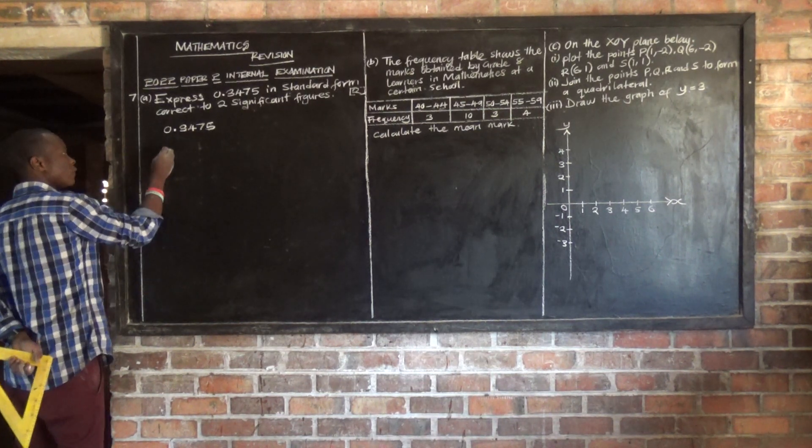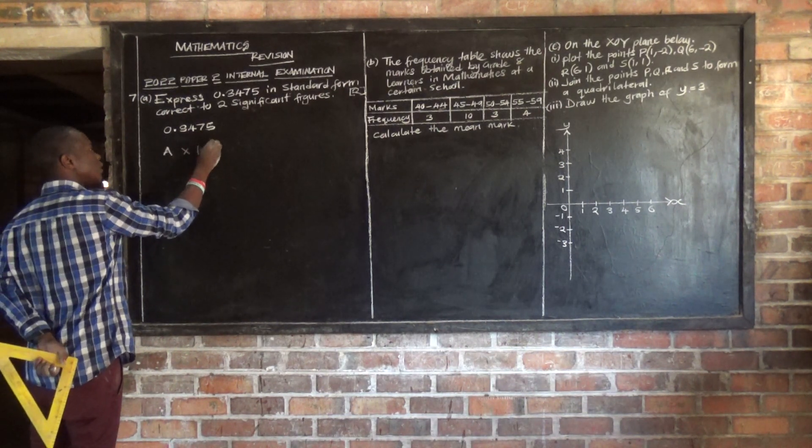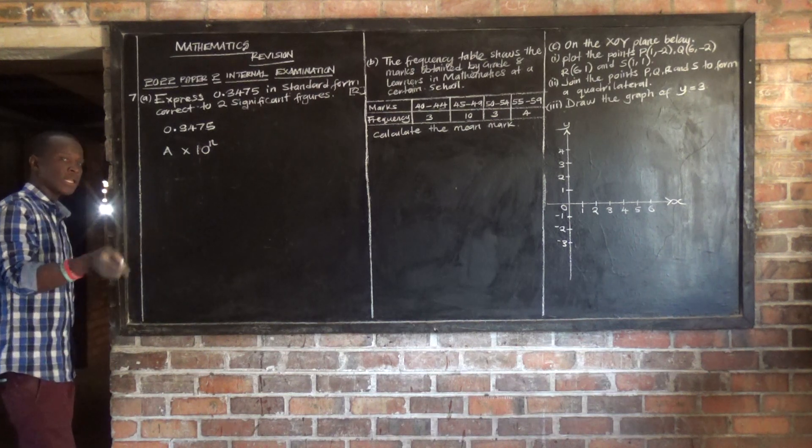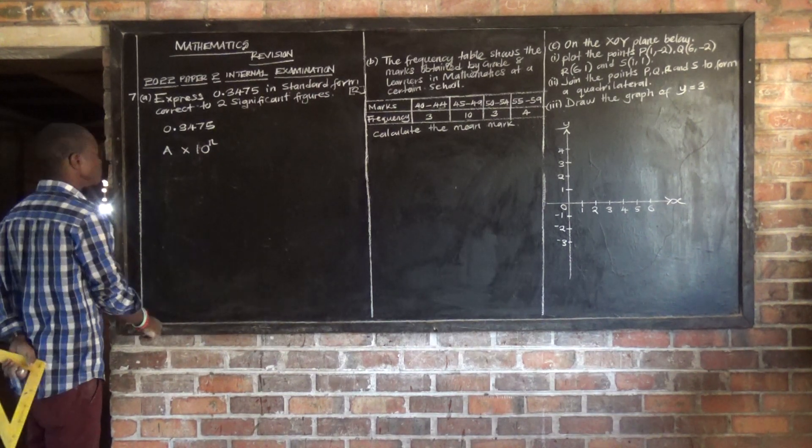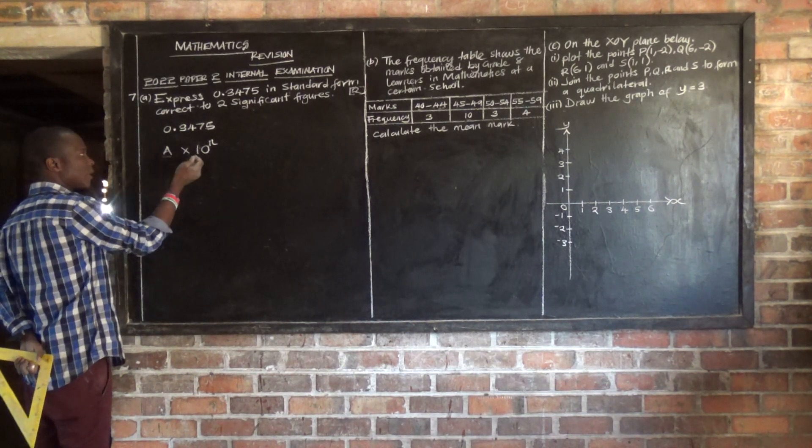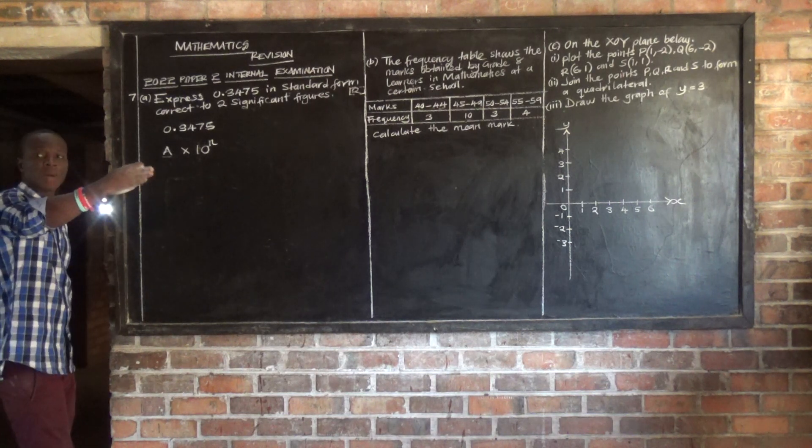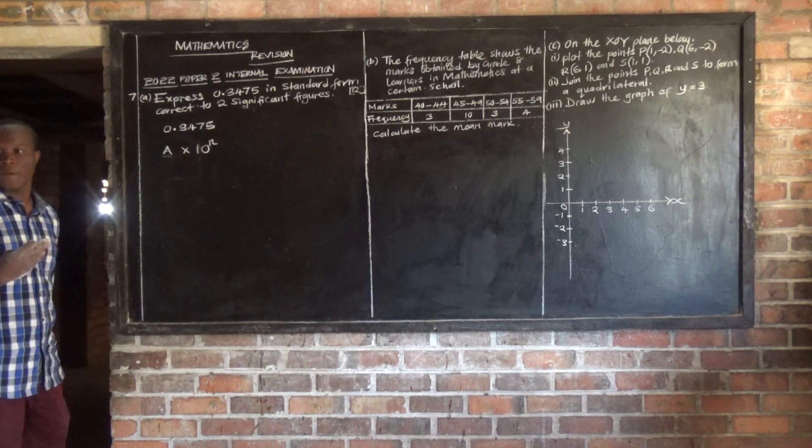When you write this, the formula is A times 10 raised to power n, where this n is the integer. The integer can either be positive or negative. Then this A is a number which is at least 1, it should start from 1 but it should be less than 10.